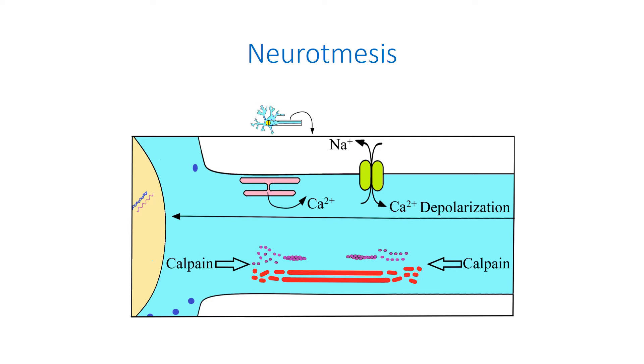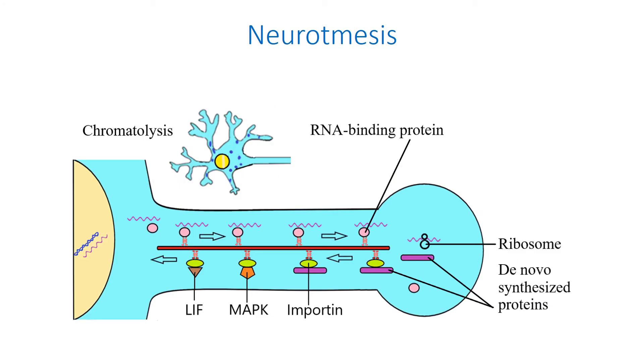The depolarization waves are followed within hours by dynein-mediated retrograde axonal transport of substances emanating at the injury site, which activates pro-regenerative mechanisms in the perikaryon. This results in cell body changes that are histologically expressed by their swelling, dissolution of chromatophilic substance and displacement of the nuclei to the periphery of the perikaryon. Another cause of transcriptional changes is the interruption of the normal supply of retrogradely transported neurotrophic factors, for example, nerve growth factor.